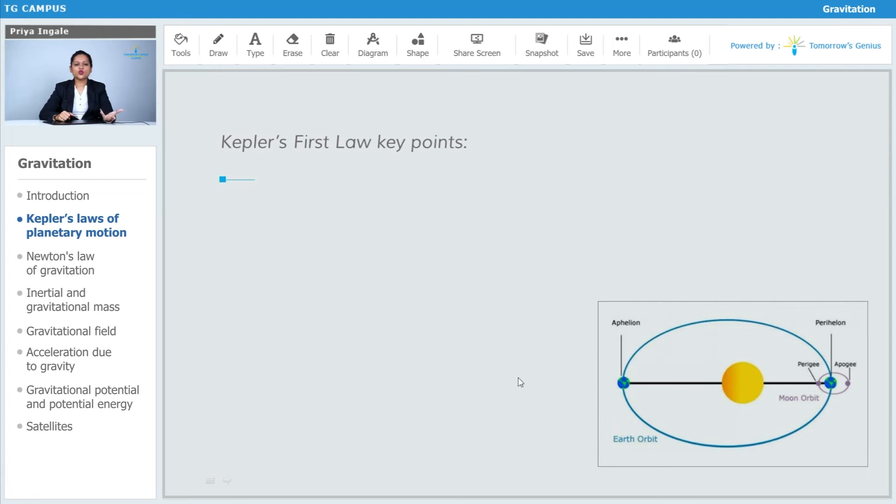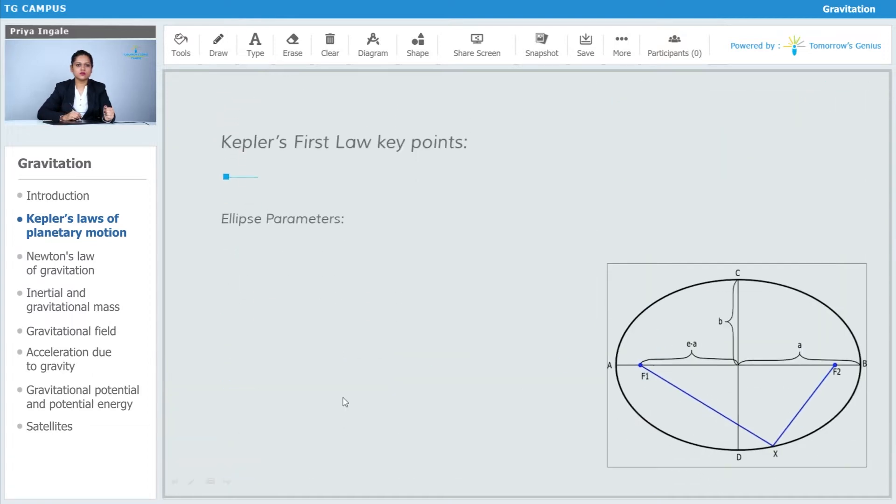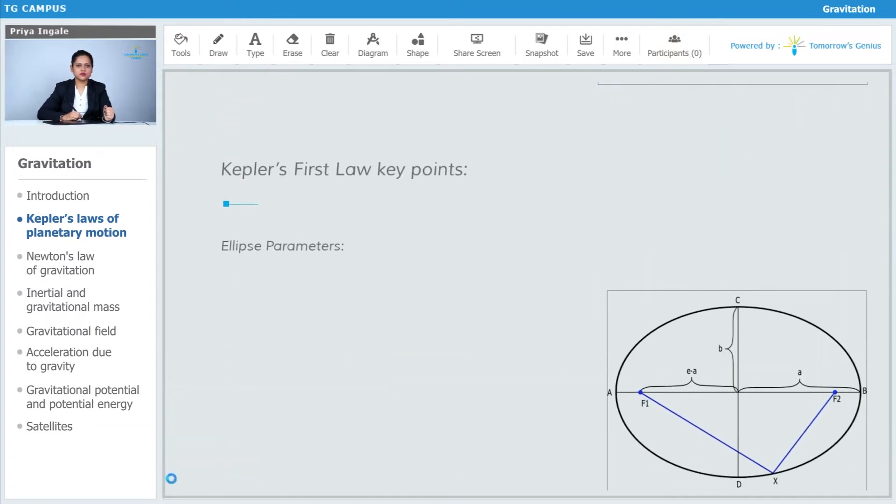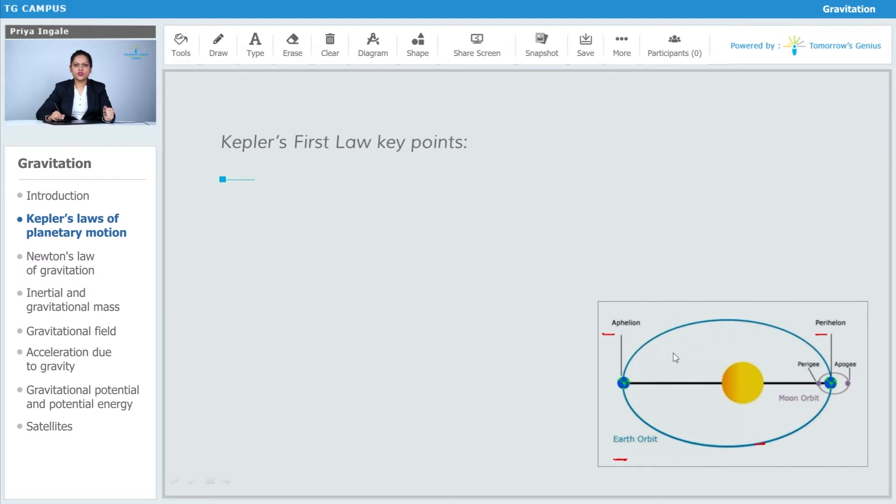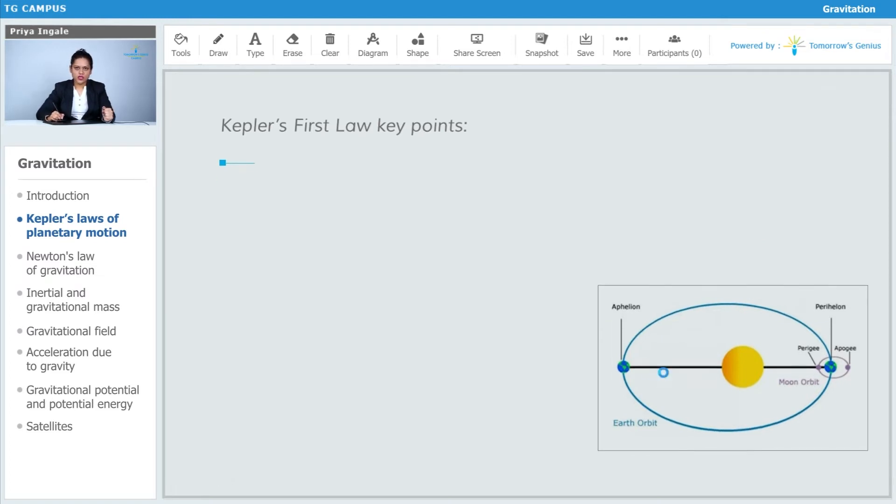Now we will see some terminologies related to orbits. When Earth is orbiting around the sun, we have these two terms: aphelion and perihelion. Here you see, this is the orbit of the Earth. In this orbit, we have two points.